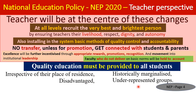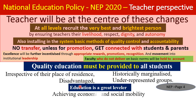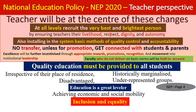No student should be the 'first graduate' of their family or community due to exclusion. Everyone should receive quality education as a leveler, enabling socio-economic stability. NEP 2020 repeatedly stresses two words: inclusiveness and equality — education must include all people and treat them equally.